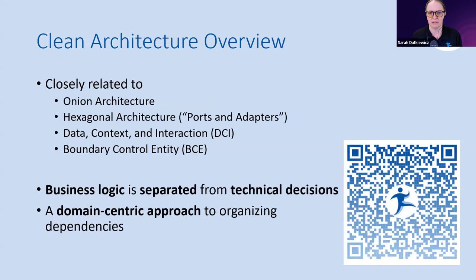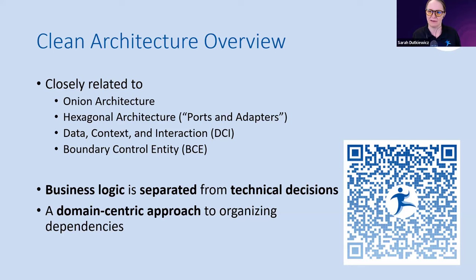Let's talk about clean architecture. What is it? Other terms you may hear include onion architecture or hexagonal architecture, which is ports and adapters. There are also other architecture patterns like boundary control entity and data context and interaction. These are all related to clean architecture — basically you're separating your business logic from the technical decisions. The key is it's a domain-centric approach. When I say domain, I'm talking about your business domain — your business area, the topic of what you're trying to solve.